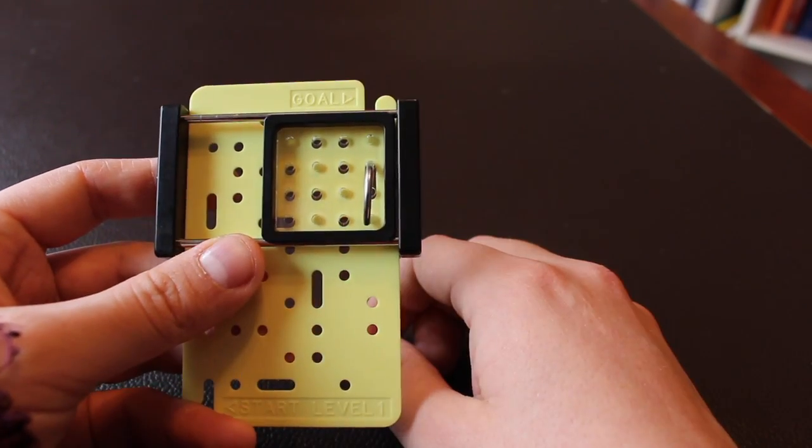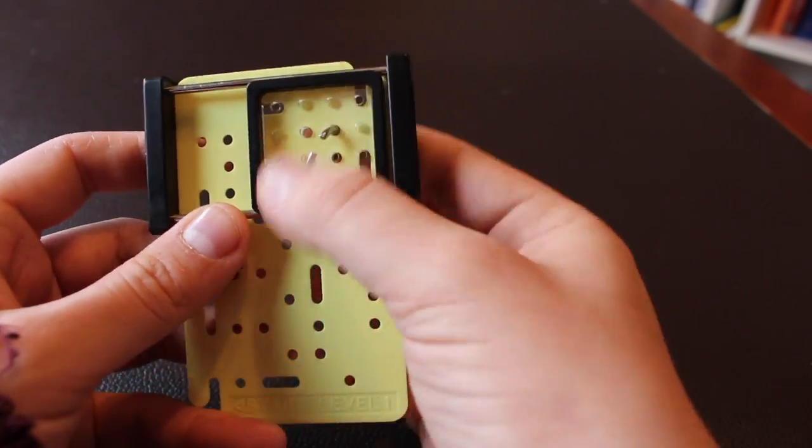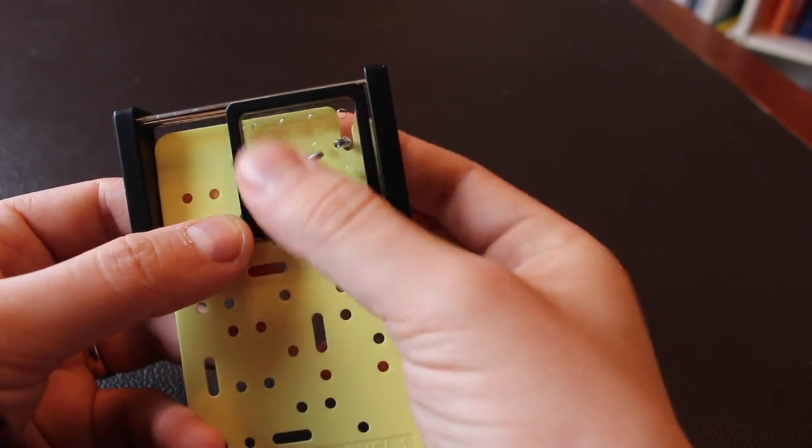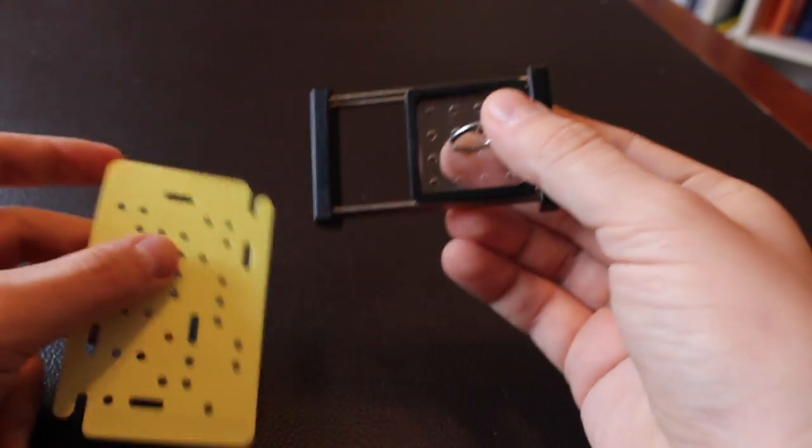Now we're nearing the end of the maze. As you can see, once you get to the very end, you can push it through the hole on the top, and then pull the panel all the way through.